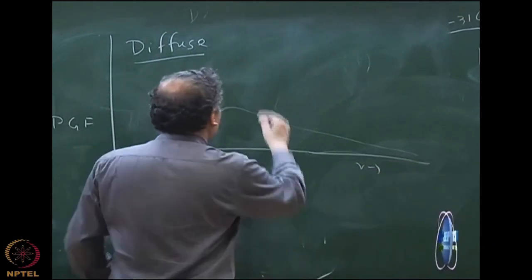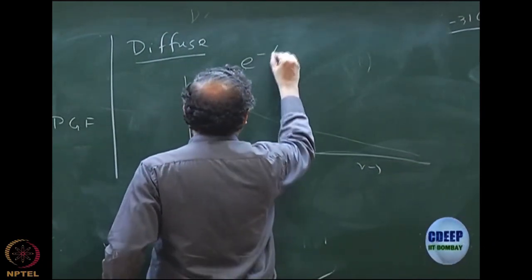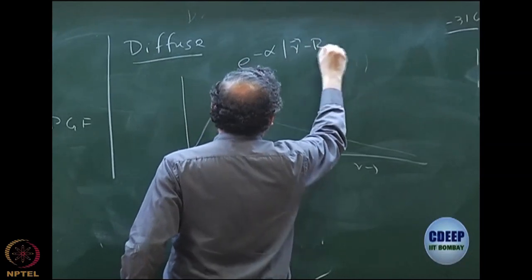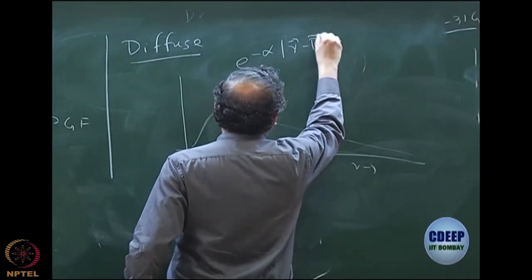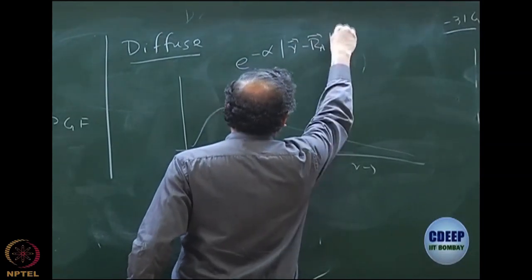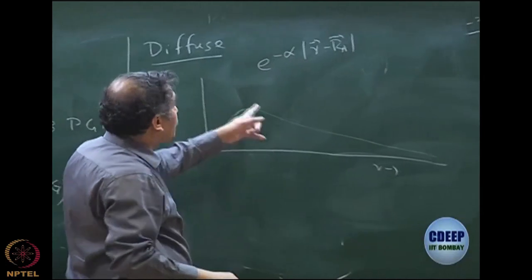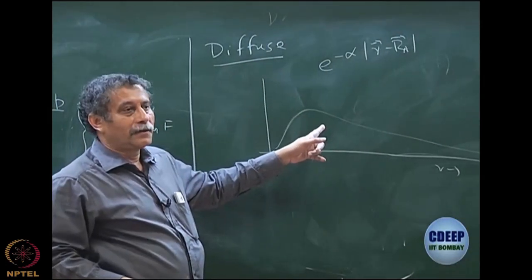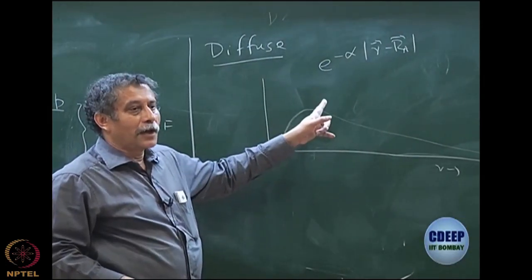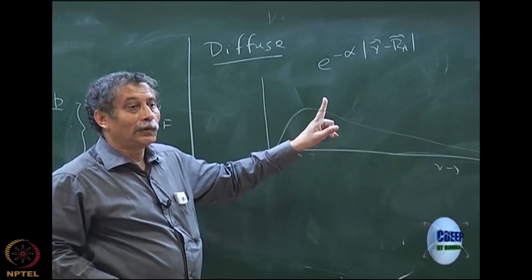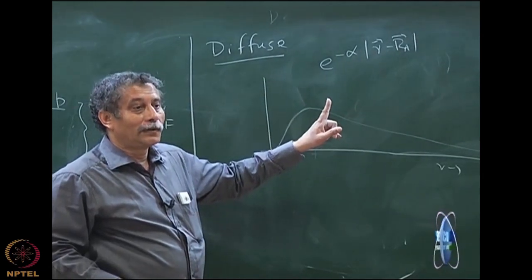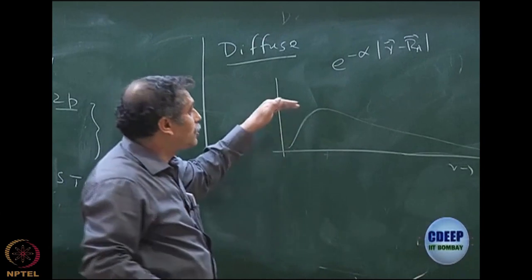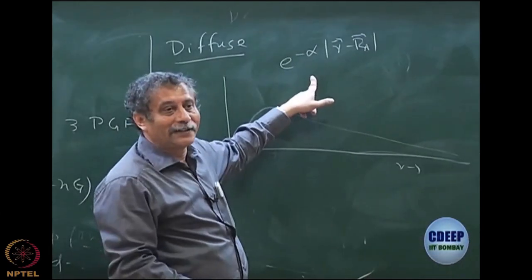If you look at a Slater or Gaussian function, what determines the diffuse nature of the function? It is the exponent alpha. To have a good diffuse function, alpha should be low. So all you do is add diffuse functions — typically one or two — and usually we add diffuse functions that are of valence type.